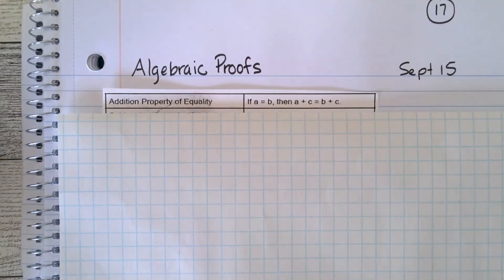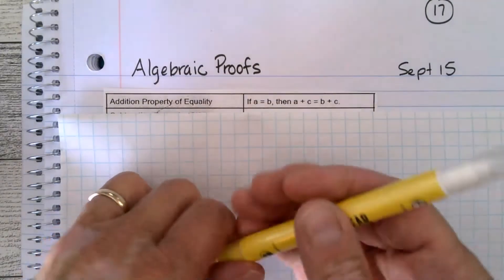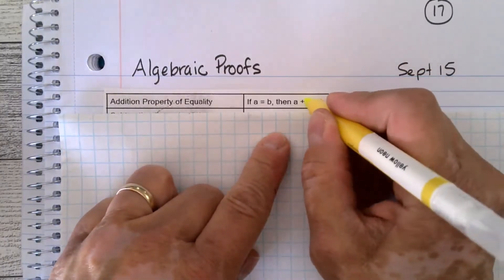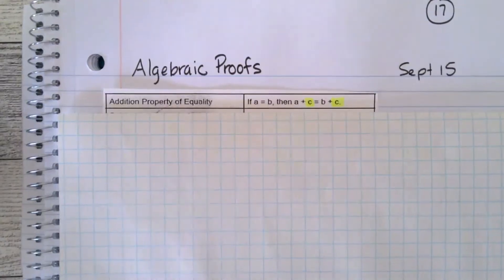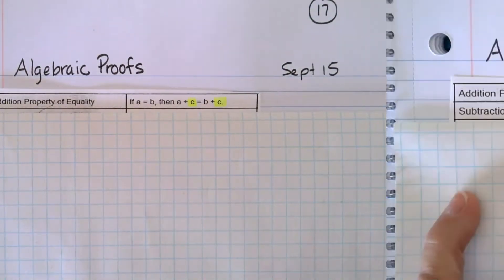The very first one is called the addition property of equality. You guys have worked with all of these already because you do all of this stuff to be able to solve equations. The first one says that if you have two things that are equal to each other and you add the same thing to both of them, then what you end up with will be something that is equal. It's like adding the same number to both sides.